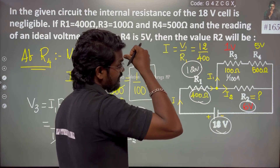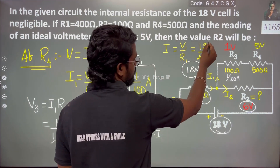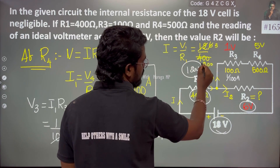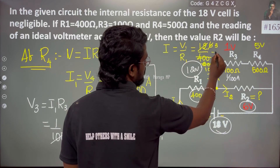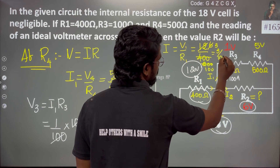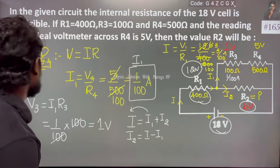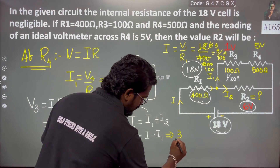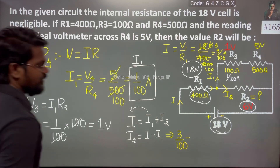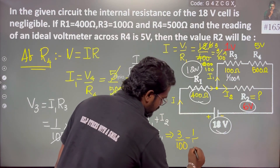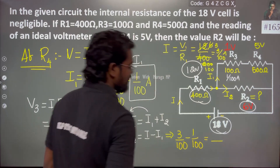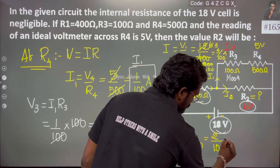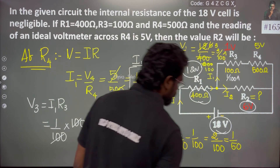Now we can simplify. I equals 12 divided by 400, and I1 equals 3 by 100 ampere. I2 equals I minus I1. The denominator is the same, so we work with the numerators as like fractions. Numerators are separate: 3 minus 1 equals 2. So 2 by 100 equals 1 by 50. I2 equals 1 by 50.